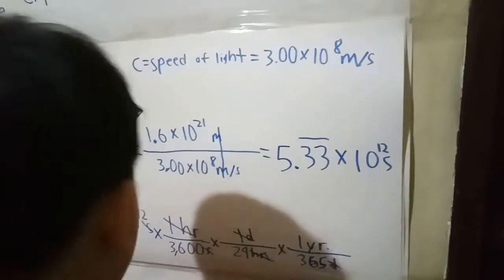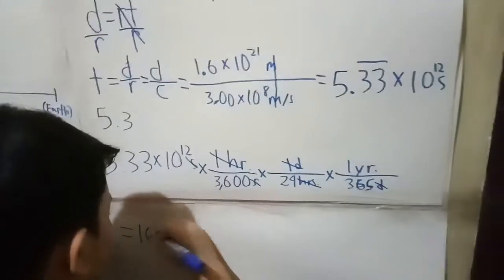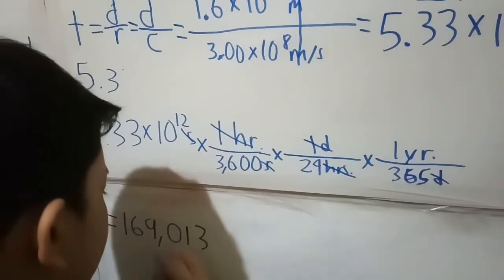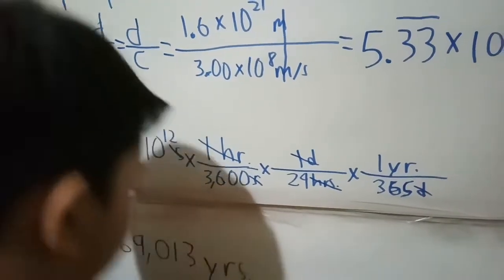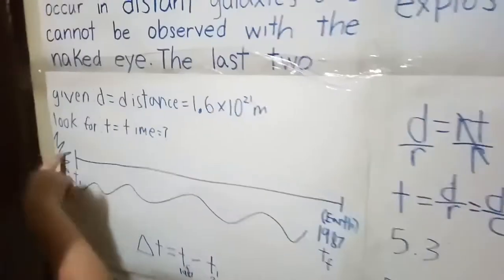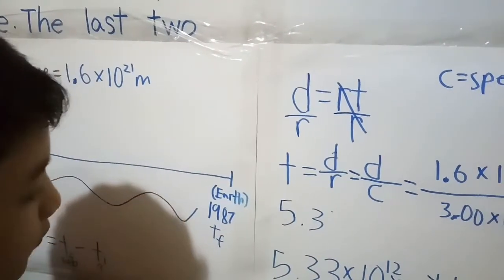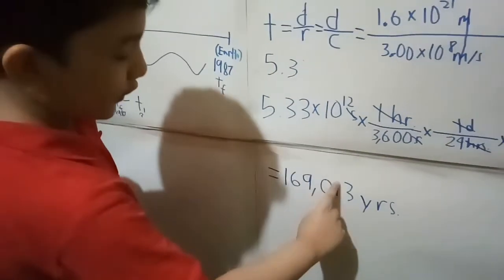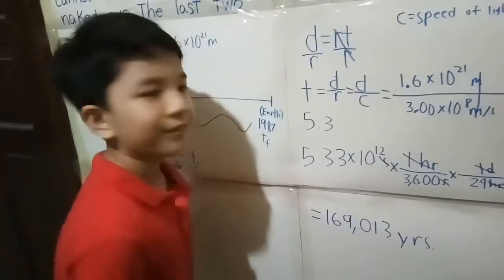This equals 169,013 years. That's the answer. Just imagine that the light from this supernova that became visible in 1987 on Earth was actually emitted 169,013 years prior to 1987. Thanks for watching.